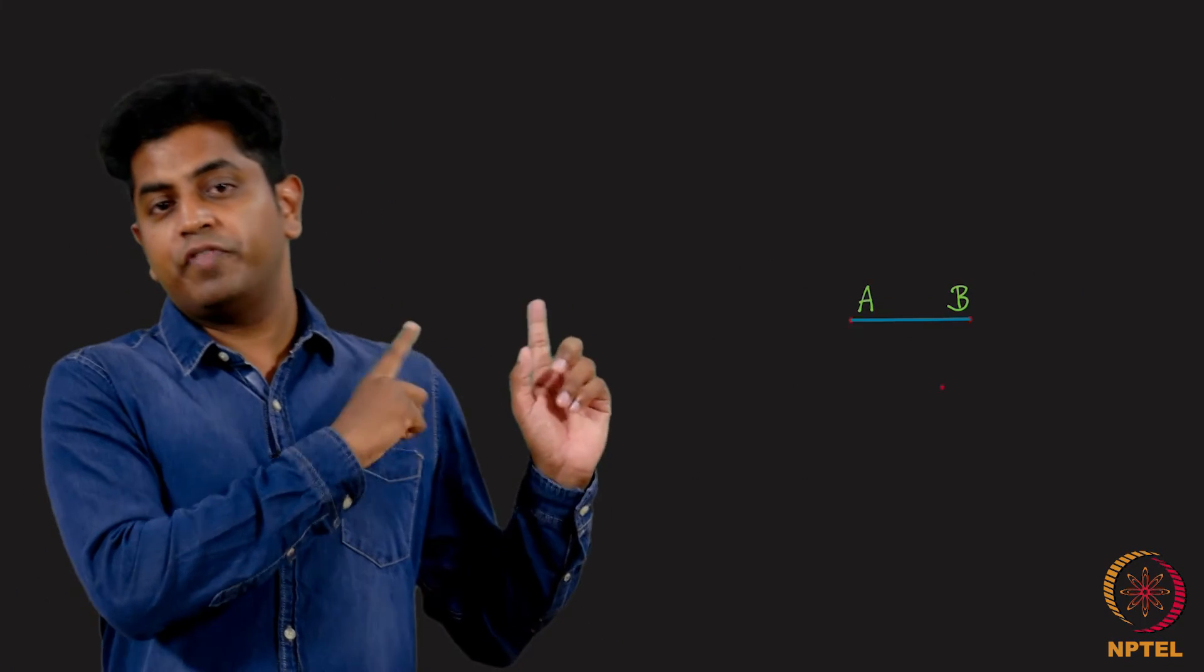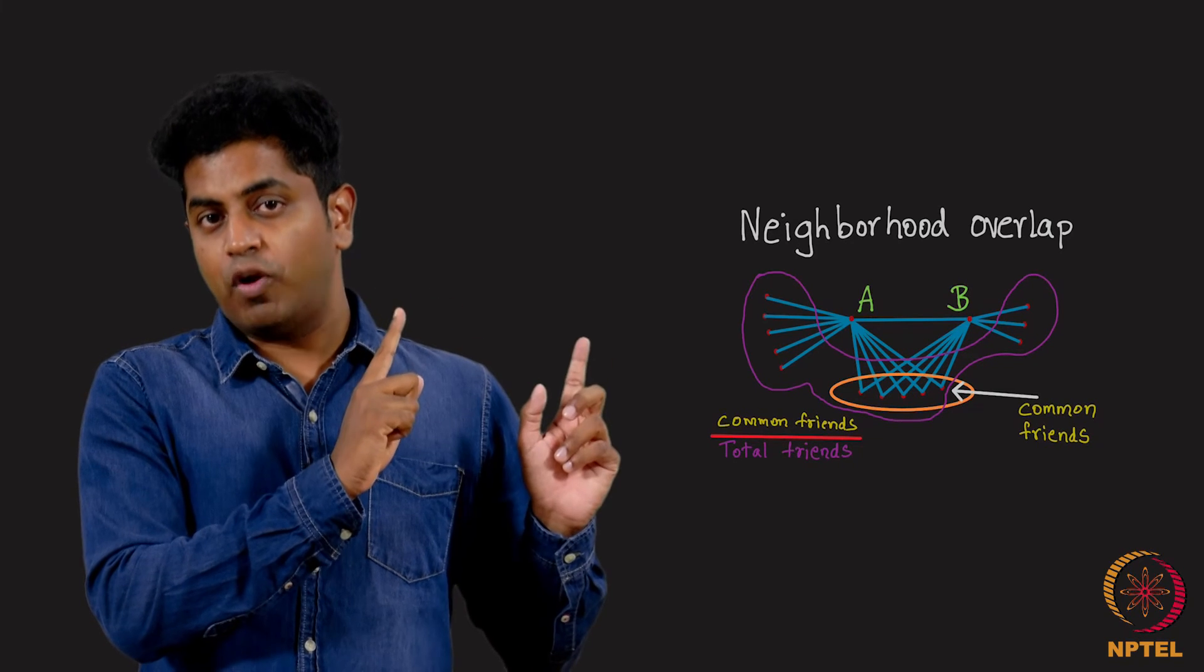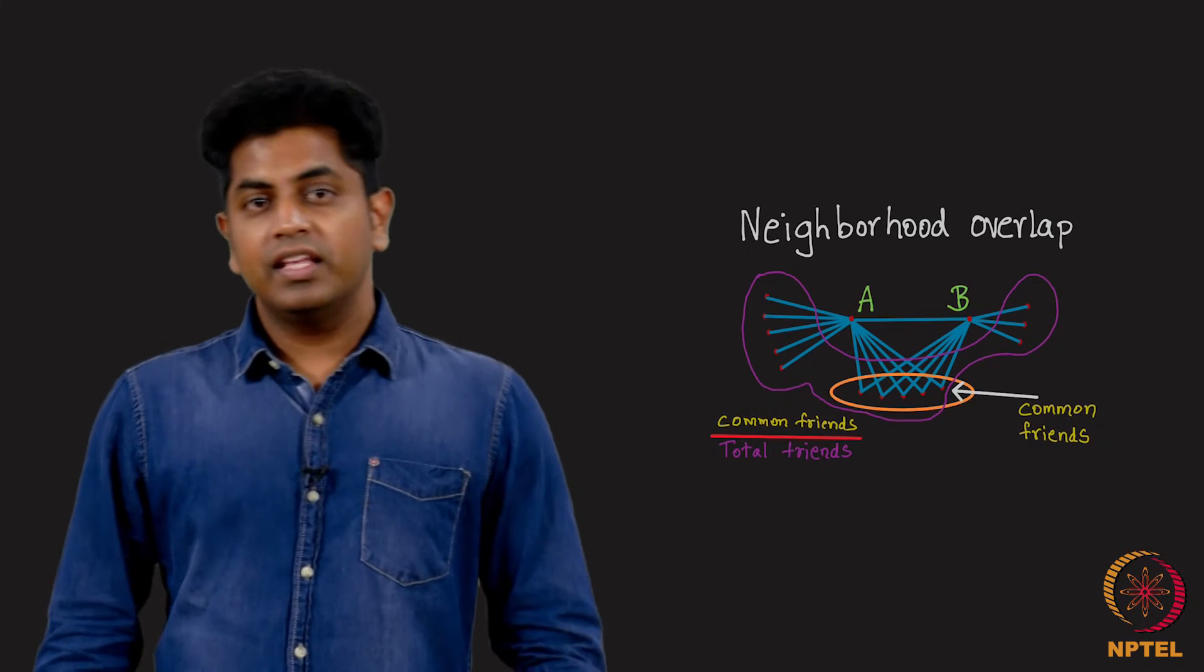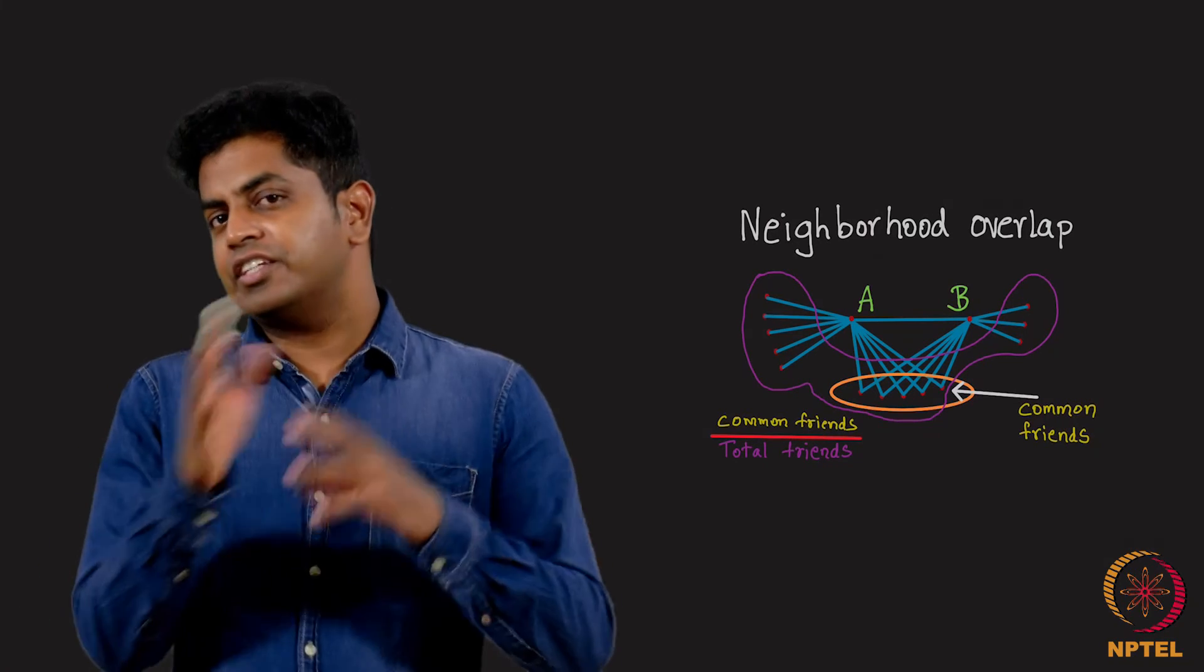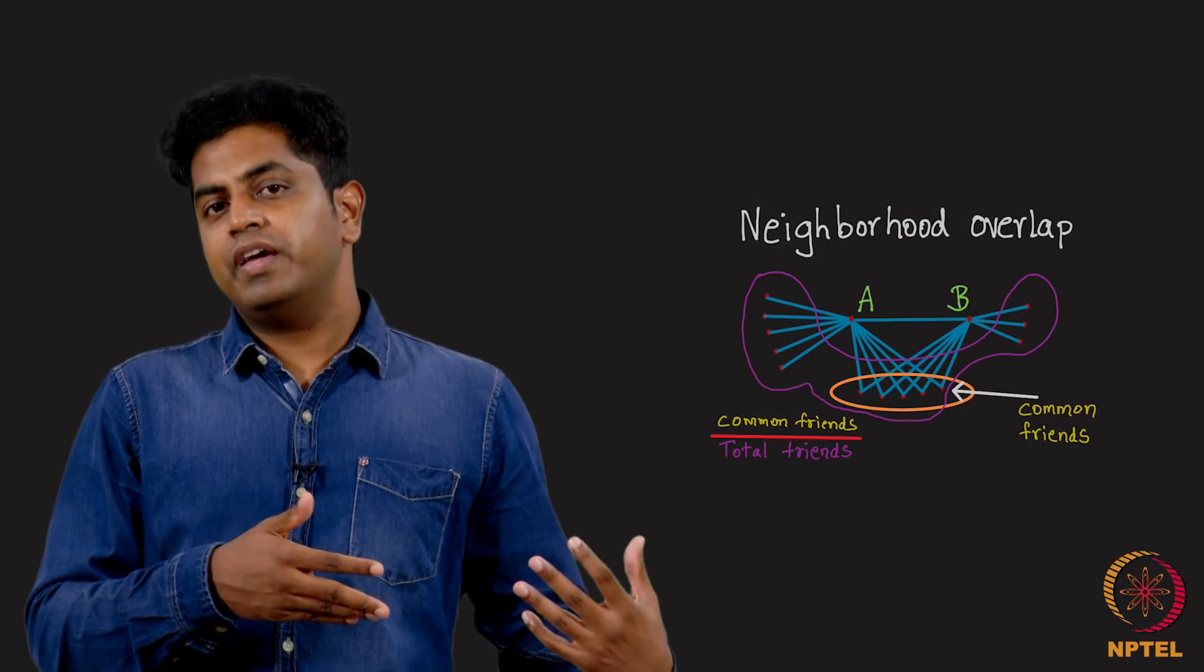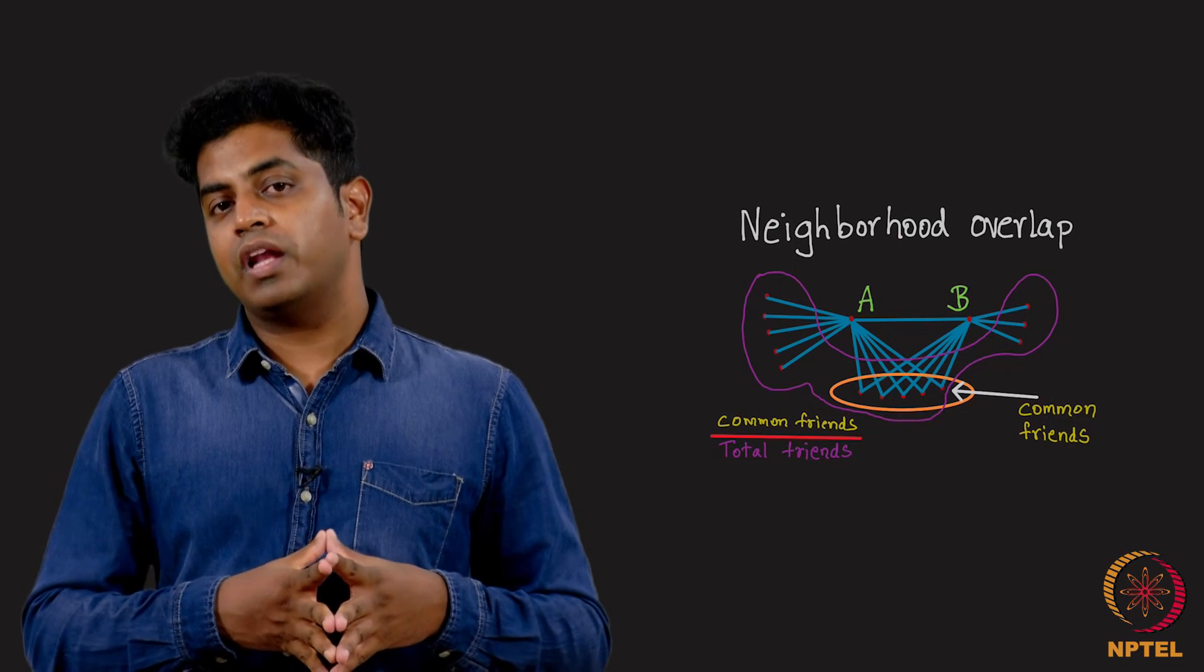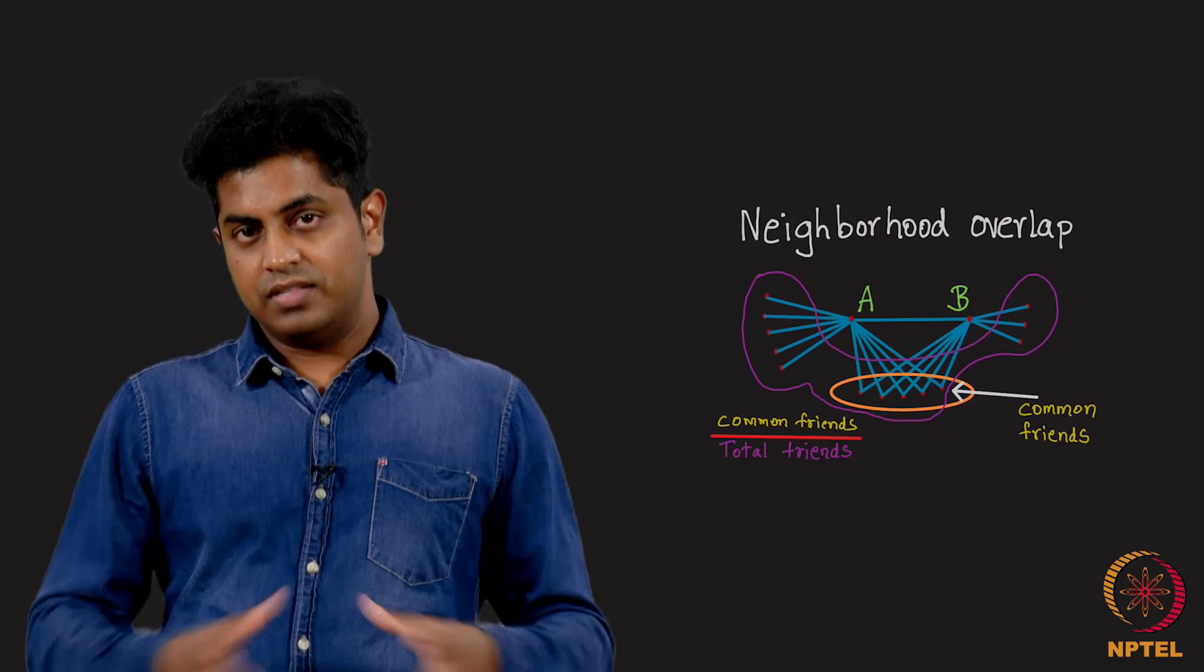What is the neighborhood overlap of the friendship between A and B? If it is close to 1, it means neighborhood overlap is maximum. So in the numerator, total number of common friends, and in the denominator all possible friends. Mathematically speaking, it is the number of elements in A intersection B divided by A union B. By A intersection B, I mean friends of A intersection friends of B divided by friends of A union friends of B. This is called neighborhood overlap. It is close to 1 means neighborhood overlap is maximum, it is close to 0 means neighborhood overlap is very, very less.